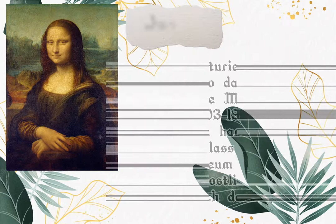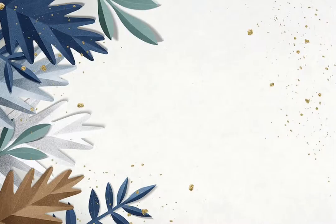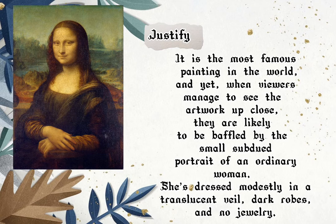Five centuries after Leonardo da Vinci painted the Mona Lisa — 1503 to 1519 — the portrait hangs behind bulletproof glass within the Louvre Museum and draws thousands of jostling spectators each day. It is the most famous painting in the world, and yet when viewers manage to see the artwork up close, they are likely to be baffled by the small, subdued portrait of an ordinary woman. She is dressed modestly in a translucent veil, dark robes, and no jewelry.